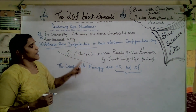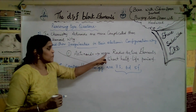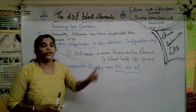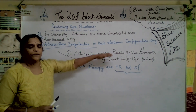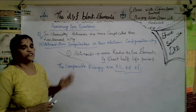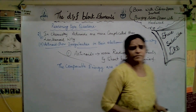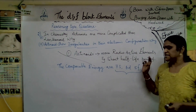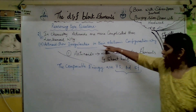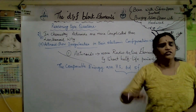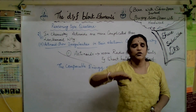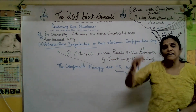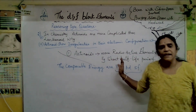Actinoids are more complicated because they have more radioactive elements and very short half-life periods. And the energy levels 7S, 6D, and 5F are comparable, naturally causing irregularities in their electronic configuration. Usually energy increases from smaller to higher, but here the sequence 7, 6, 5 represents an irregularity.